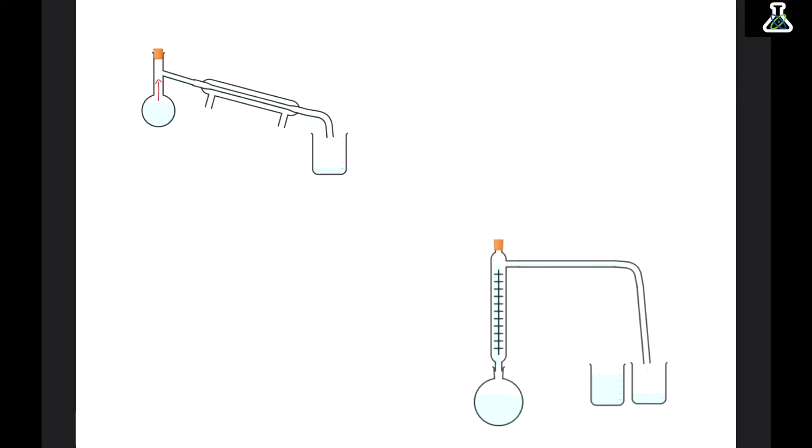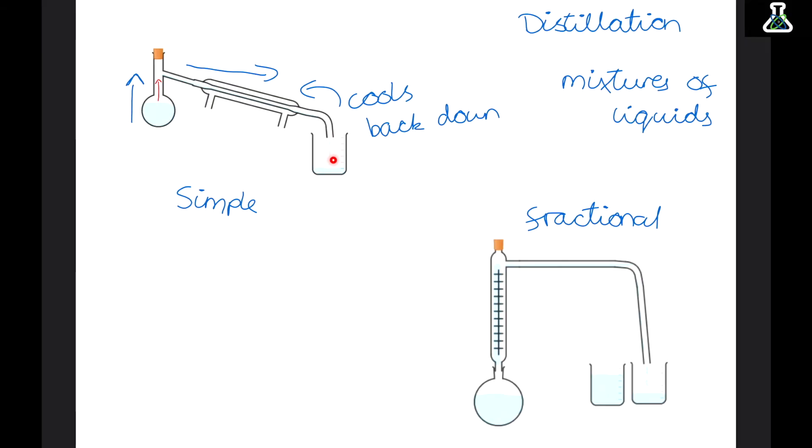The last separation method is called distillation. And this separates mixtures of liquids. Now we have two types. Simple distillation and fractional. We'll look at simple distillation first. So we have the mixture at the bottom in this flask. Now if we heat the mixture up it will rise as it turns into a gas. This will then move down this tube through a condenser. And now the condenser's job is to cool it back down into a liquid. And then it's collected in a flask at the bottom. Now this is really good. But it only works with liquids with really different boiling points. As one has to stay in this flask over here and not boil at all.